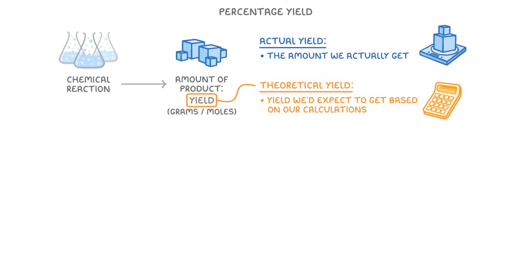For example, if we reacted 2 grams of hydrogen with 16 grams of oxygen, then we should get 18 grams of water. So that's our theoretical yield, because 2 plus 16 equals 18.